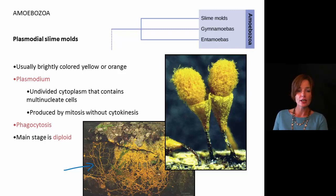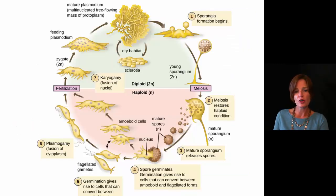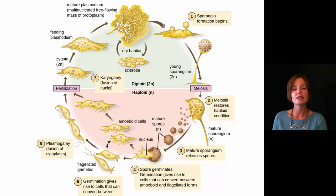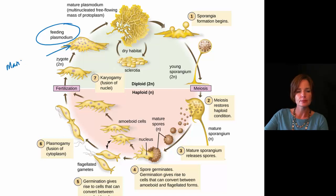They do feed by phagocytosis. The different nuclei we see in there are going to be diploid, which means they have two sets of chromosomes. Looking at the overall life cycle, we can see that multi-nucleated plasmodium — notice how it does have many nuclei in the same cytoplasm.